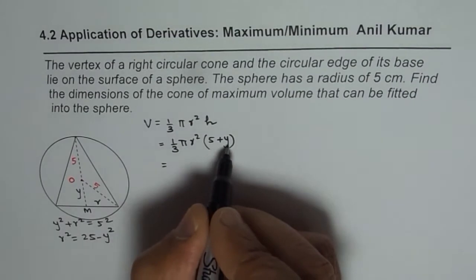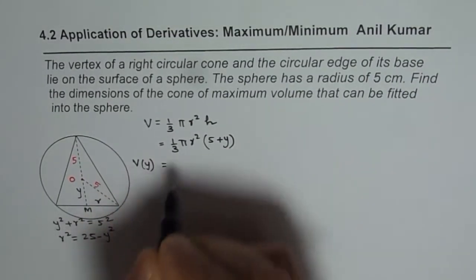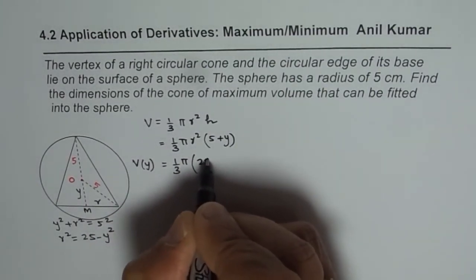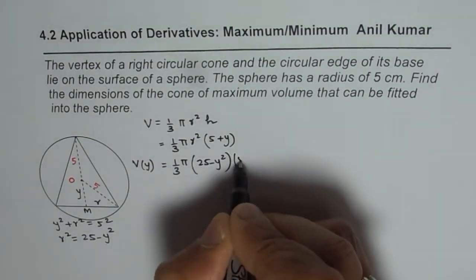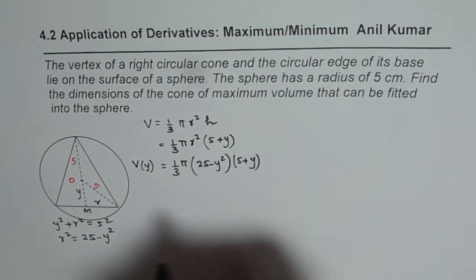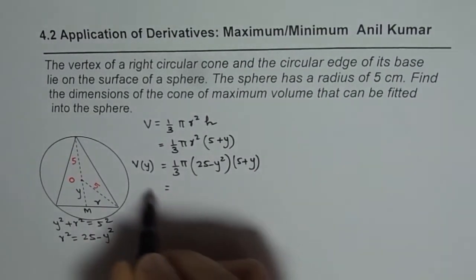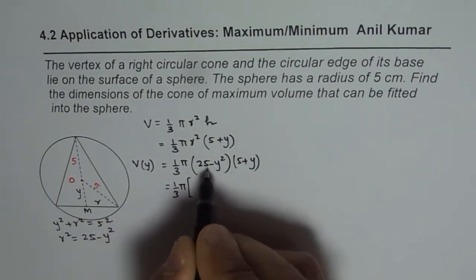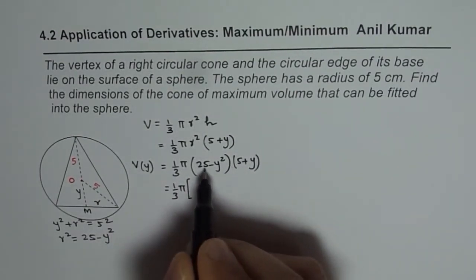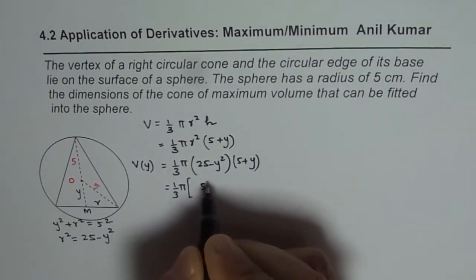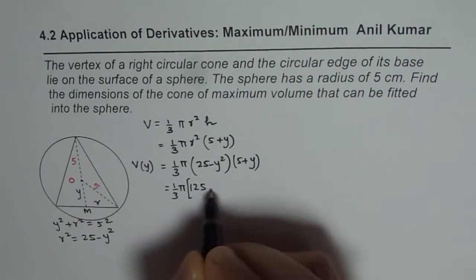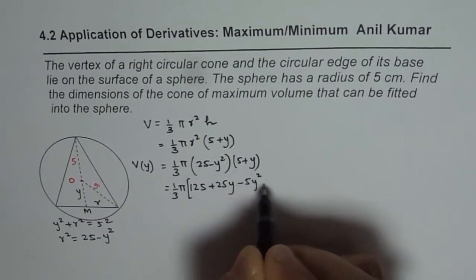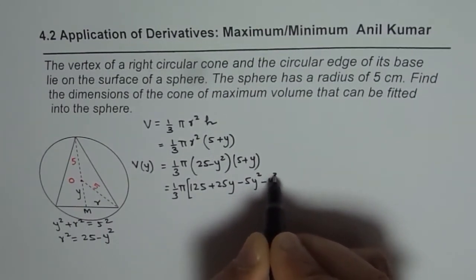So that is how it is related. So if I replace r with 25 minus y squared, I get volume in terms of y. So we can say volume in terms of y is 1/3 pi, and instead of r squared, we are writing 25 minus y squared times y plus 5. So that becomes our expression for volume. We can simplify this a bit. Let us say 1/3 pi. Let us multiply these terms. 25 times 5, so 5 times 5 is 25, 125. Plus 25y minus 5y squared minus y cubed.